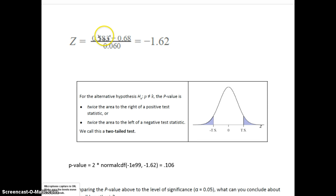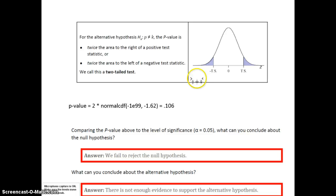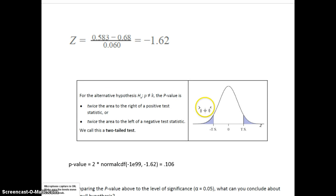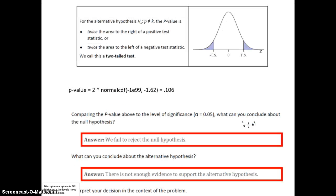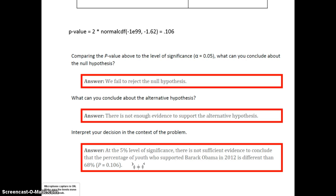The z-value is p-hat minus p over the standard error, which gives minus 1.62. A two-tail test means we get the probability on both the left and right sides of the curve. Since the test statistic is negative, we get the area on the left-hand side, and by symmetry the right side is exactly the same — so we just double it. The p-value is 2 times normalCDF(−1E99, −1.62), which equals 0.106. The p-value is high compared to alpha, so we must be shy — we don't reject or accept any hypothesis. Therefore, we do not have enough evidence to support the alternative hypothesis.